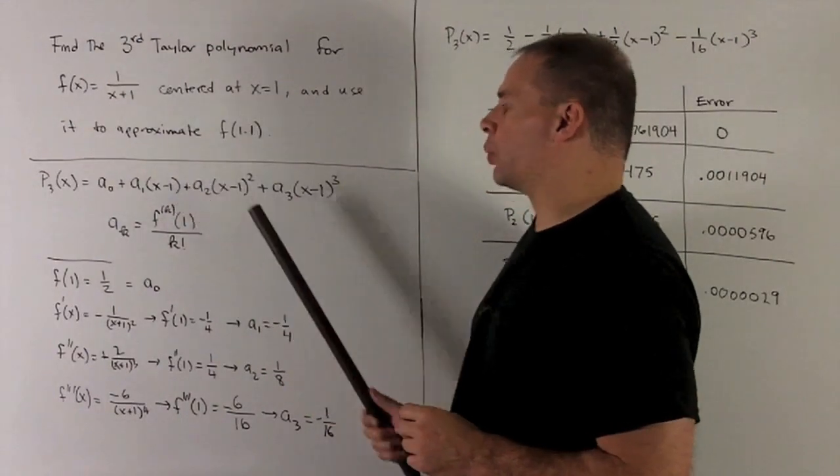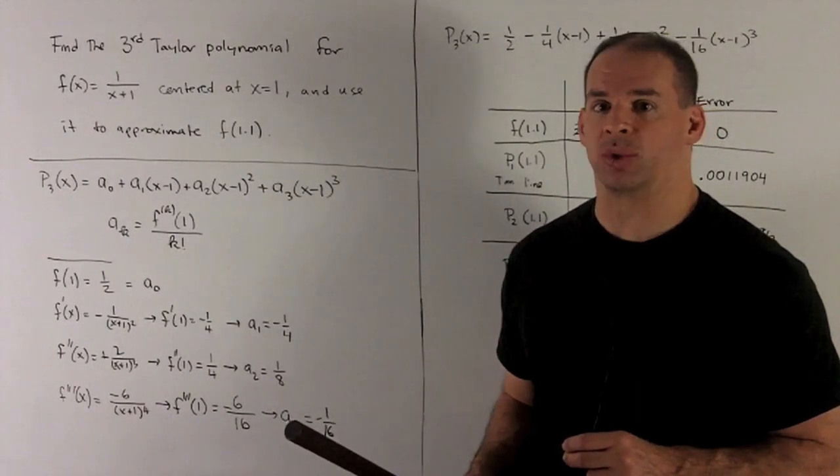So our recipe is going to be third Taylor polynomial. We're going to have a polynomial loaded up with a bunch of a's, and then those a's are going to be powers of x minus one. Since I only want the third Taylor polynomial, our highest exponent is going to be a three. Then the recipe for getting your a's: a sub k is the kth derivative of f evaluated at one, and then we divide by k factorial.